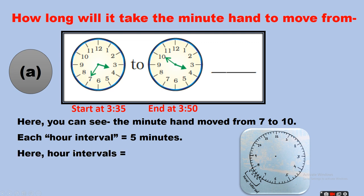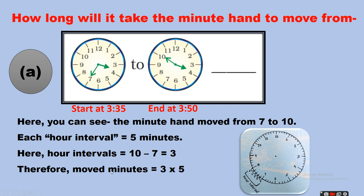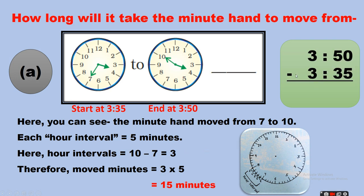The number of intervals is 10 minus 7, which equals 3. Each interval has 5 divisions, so the minutes moved equals 3 multiplied by 5 — three fives are 15 minutes. In the other method: ending time 3:50 minus starting time 3:35 equals 15 minutes. So the answer to question A is 15 minutes.